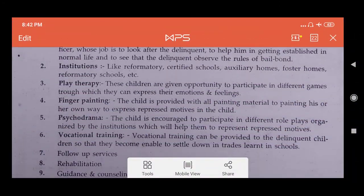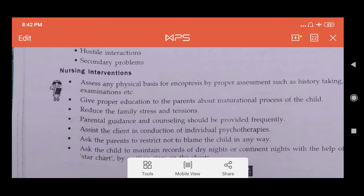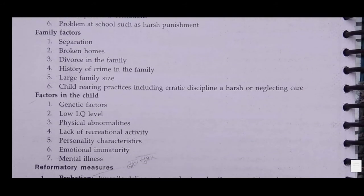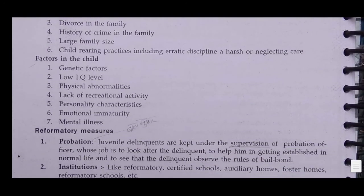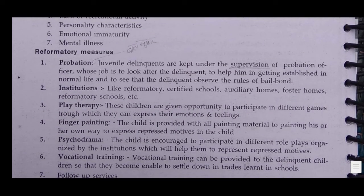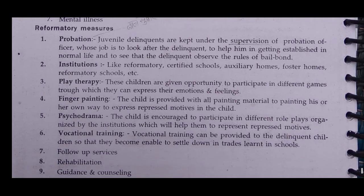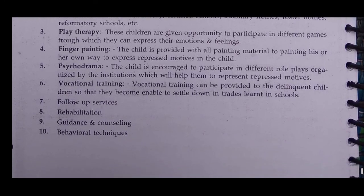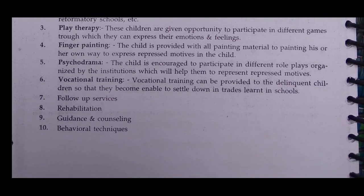So these are all the topics about juvenile delinquency. We have seen the introduction, some causes like social factors, family factors, and factors in the child. Then we have seen some management or reformatory measures like probation, institutions, play therapy, finger painting, psychodrama, vocational training, follow-up, rehabilitation, guidance and counseling, and behavioral techniques.